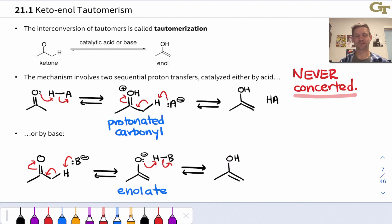Keep this in mind: this reaction is never concerted. It's always a two-step proton transfer mechanism. This occurs very rapidly because these proton transfers are extremely rapid, so keto-enol tautomerization comes to equilibrium very quickly.